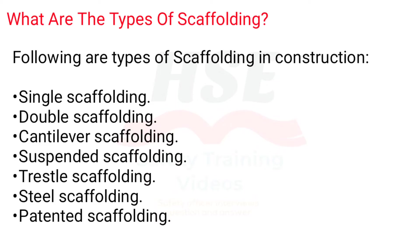What are the types of scaffolding? The following are types of scaffolding in construction: single scaffolding, double scaffolding, cantilever scaffolding, suspended scaffolding, trestle scaffolding, steel scaffolding, and patented scaffolding.